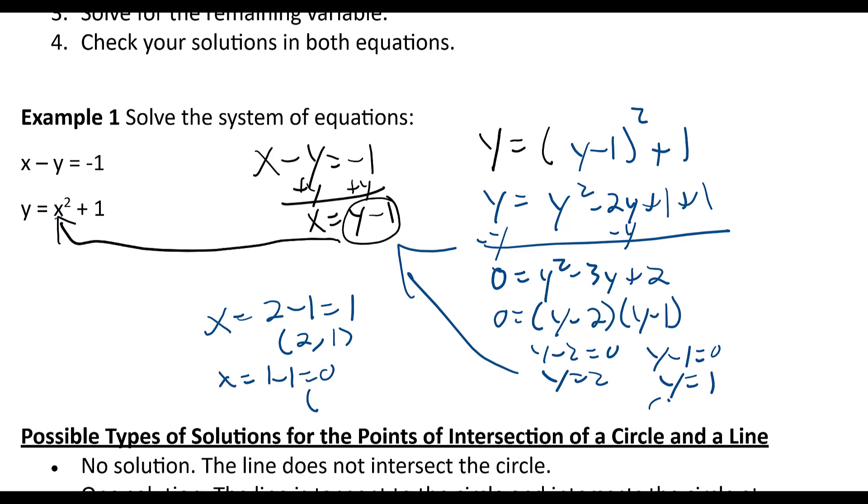So zero for x and one for y. Sorry, I think I got these backwards. I apologize. One comma two would be this one. X is the one, two is the y. And that's it. These are the solutions.